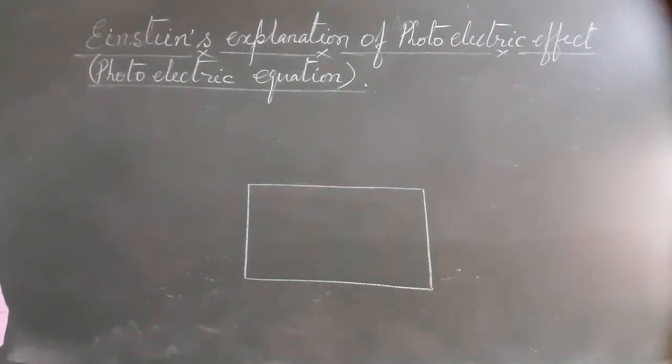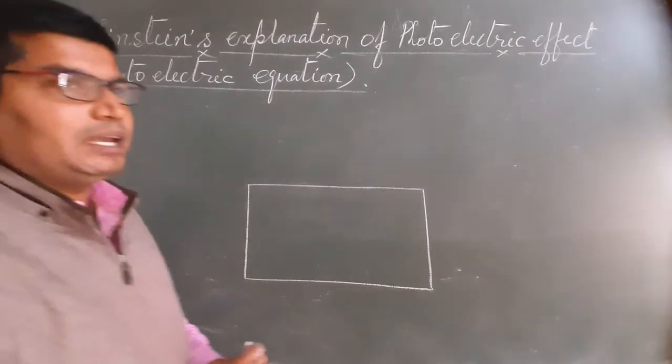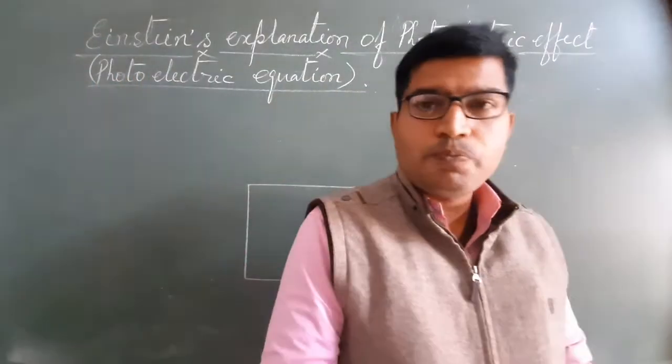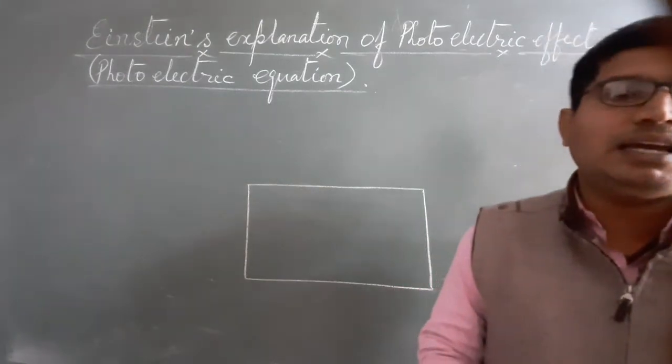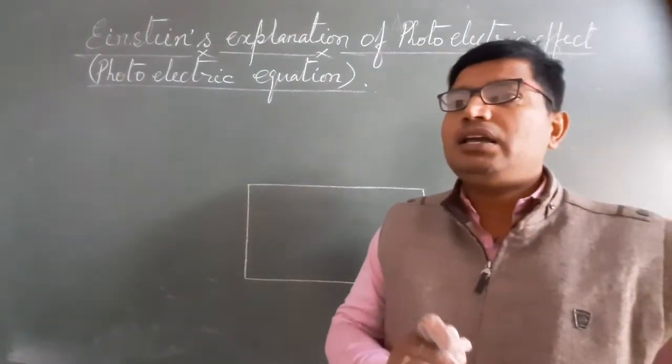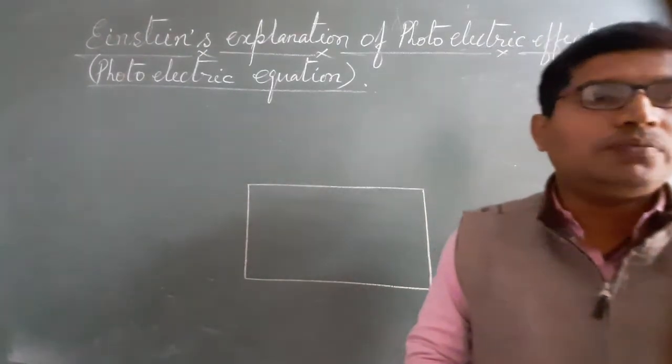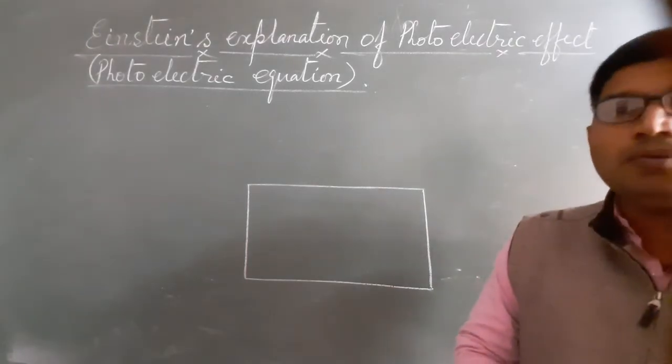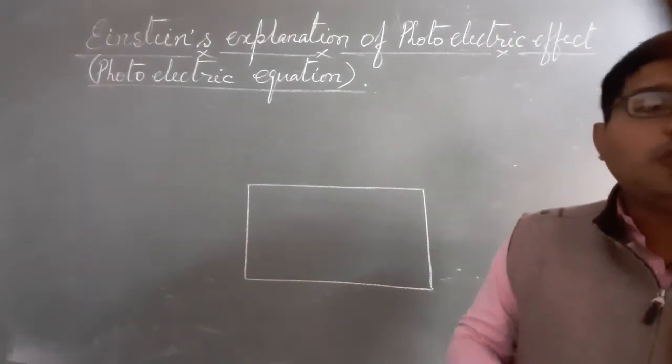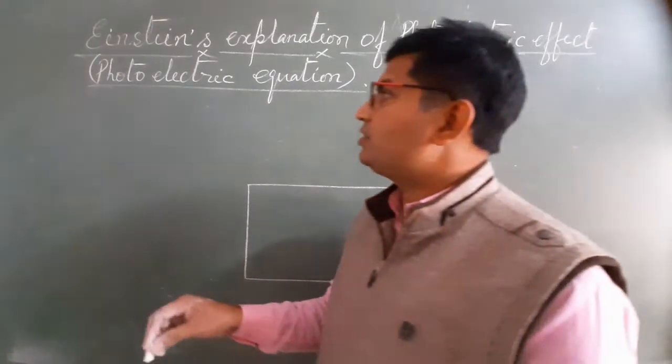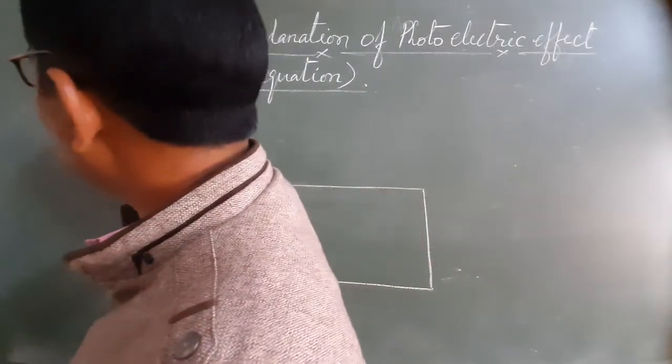What is Max Planck's Quantum Hypothesis? Max Planck's Quantum Hypothesis is that the emission or absorption of light takes place in the form of small bundles or packets of energy which are called quanta or photons.